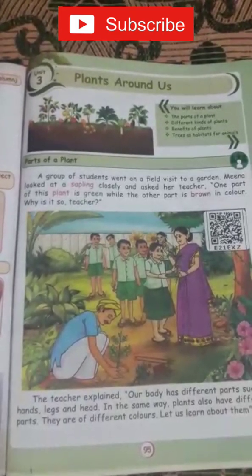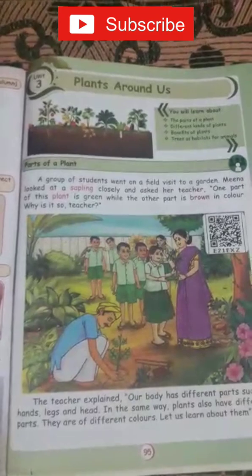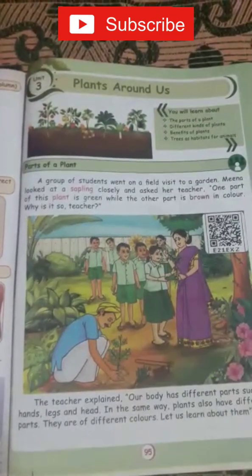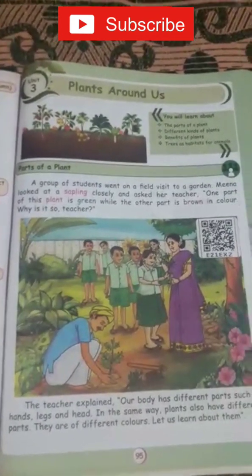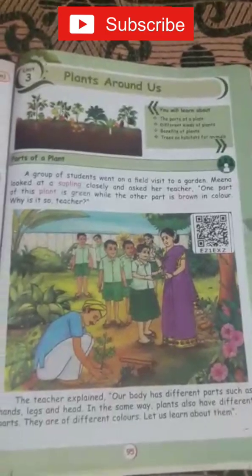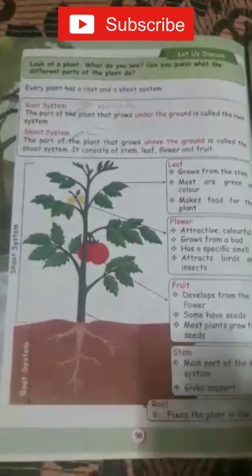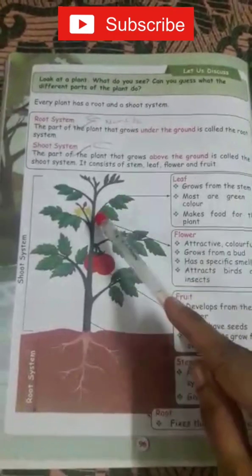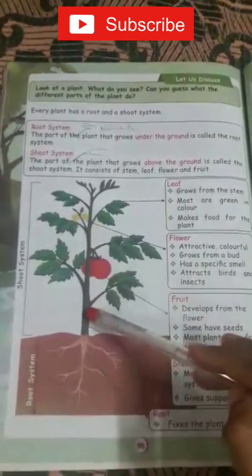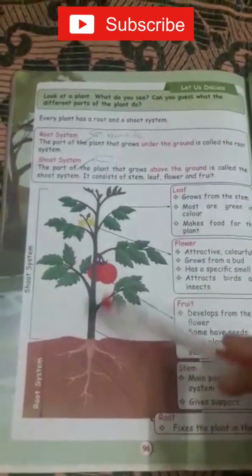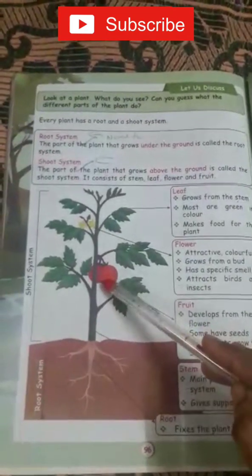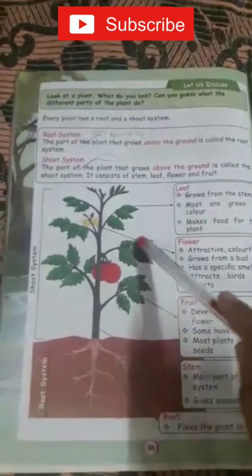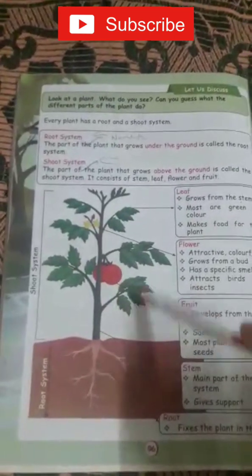What are the parts of plants? Tell me. Root, stem, leaf, buds — everything. Let us see the structure. This is leaf, stem, root, fruit, buds. These are the parts of the plant.